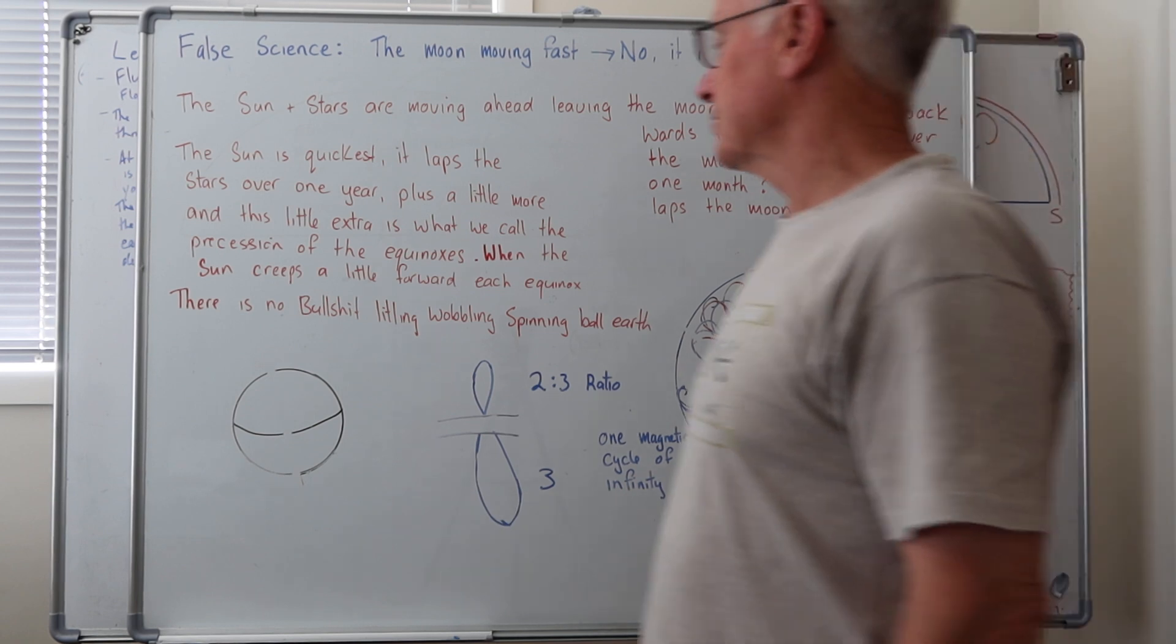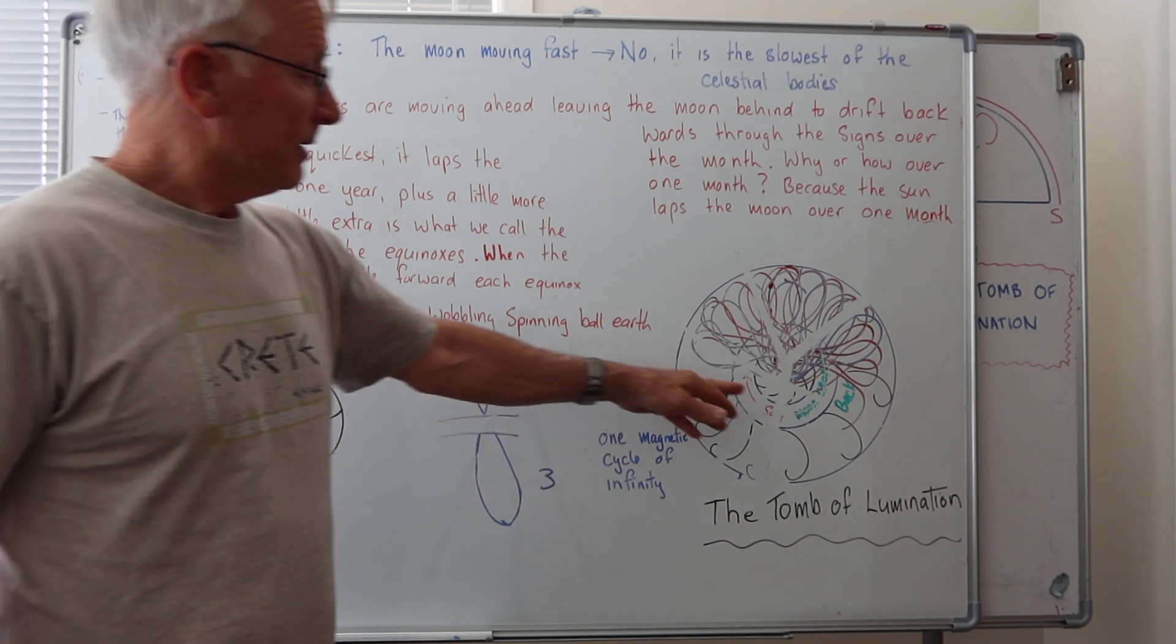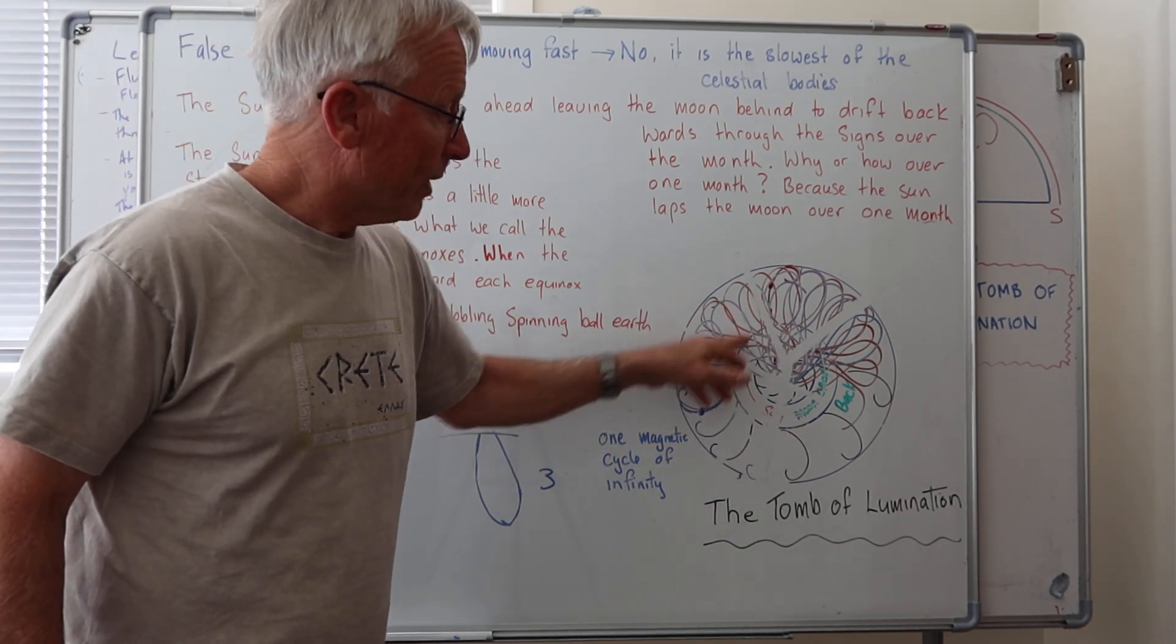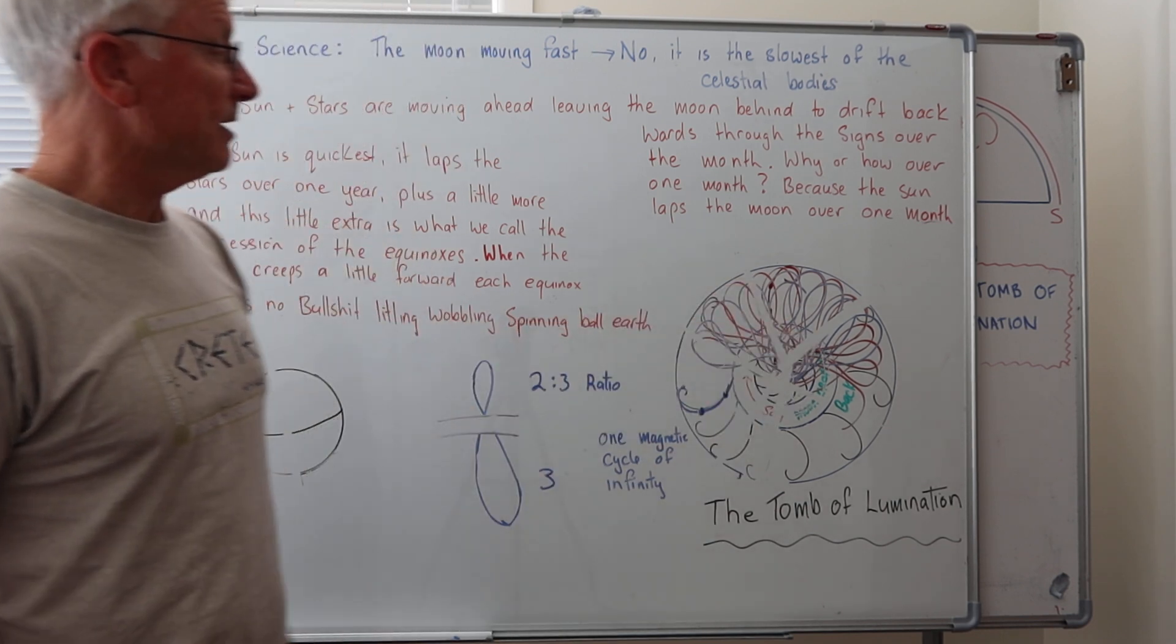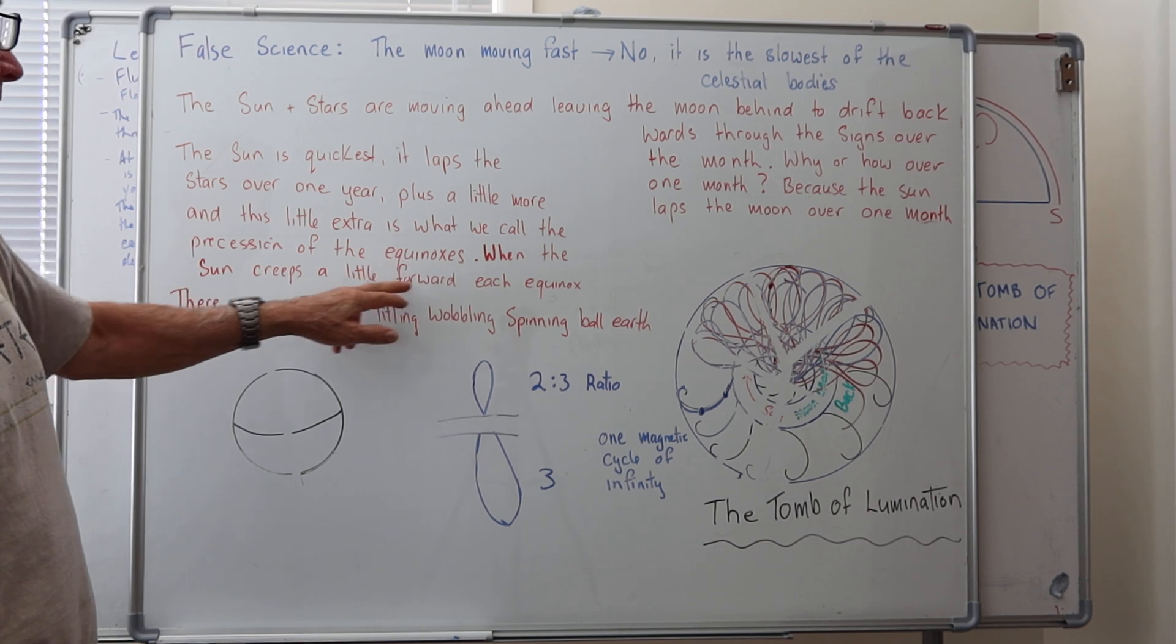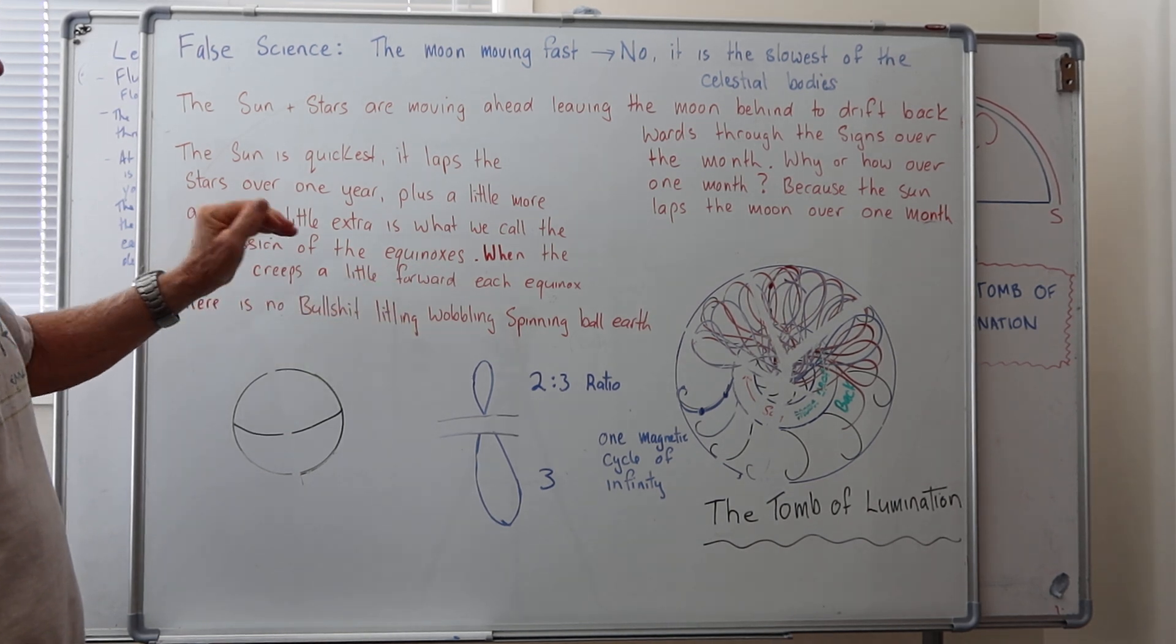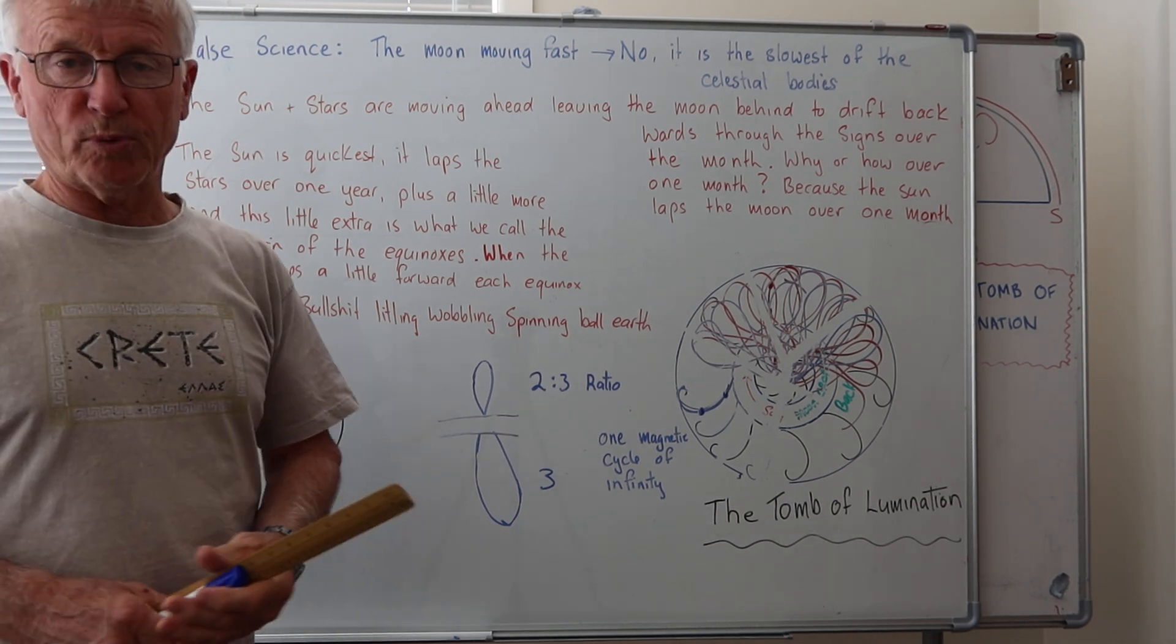That's it guys. That's the way it works. Moon dropping back. Sun and stars flying ahead. The sun laps the moon over one month. And then the sun laps the stars over one year. And that little creep forward of the sun is the procession of the equinoxes. No tilting spinning wobbling BS ball.